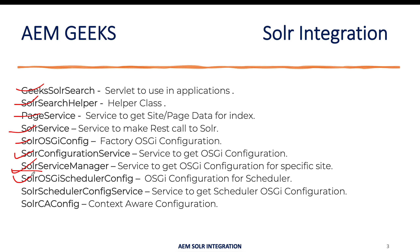We'll have one more OSGi configuration for the scheduler — defining how often the scheduler should execute. We'll also see a new way of doing it using a Job rather than the Runnable interface. The Scheduler Solr Scheduler Config Service brings in that configuration. Finally, Solr CA Configuration is a context-aware configuration containing the site ID and the collection name. The site ID identifies your site in AEM-Solr, and the collection name identifies the collection in your Solr server.